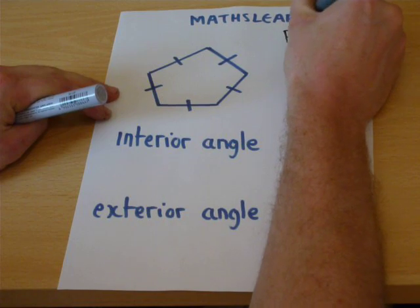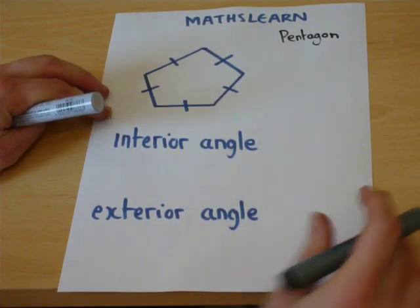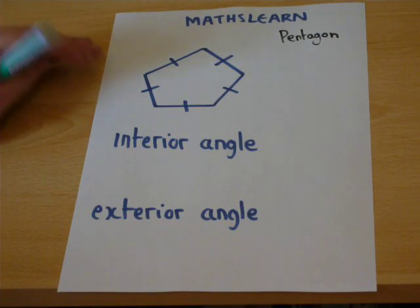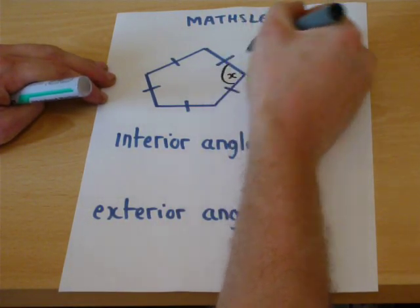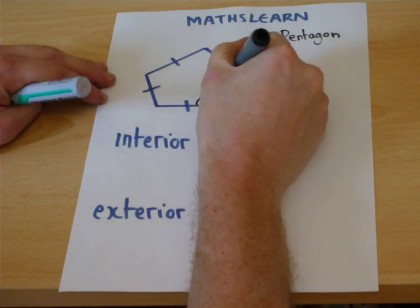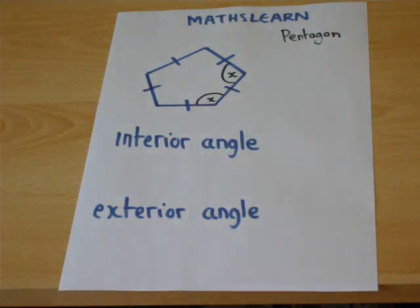there's what's called the interior angle and the exterior angle. Now the interior angle would be, for example, this coordinate here, or this coordinate here, and so on and so forth around the shape. There are five such coordinates, five such angles.